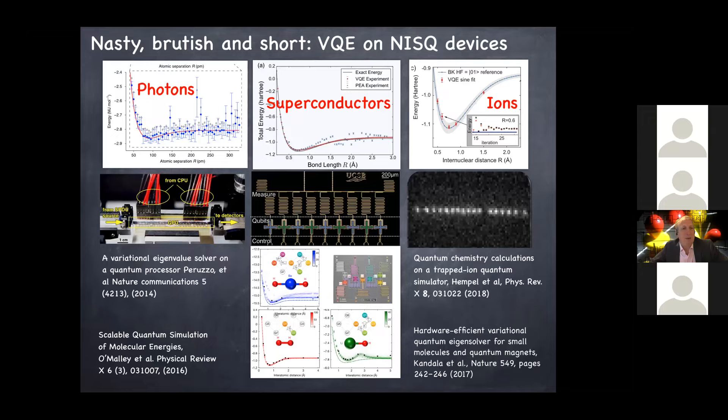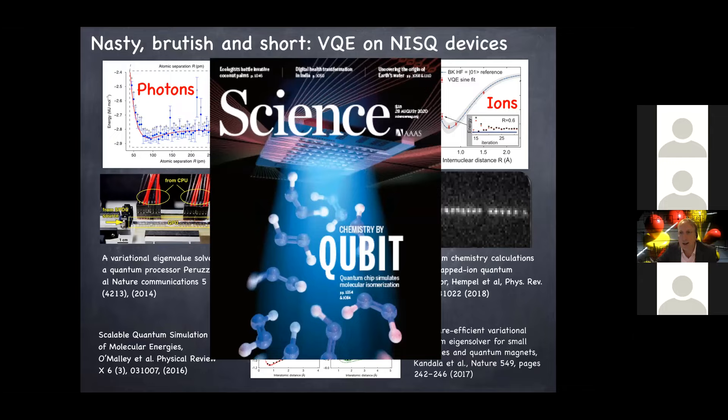We've managed to do experiments. So various we and many other groups working very hard on this have managed to do experiments on photons, which was the first experiment in the top left. Superconductors, there's two. The top one is an experiment by Google and the bottom is an experiment by IBM. The one on the right is an ion trap experiment that was done in Innsbruck. And as Sabri mentioned, we now have this very nice STAQ project where we're hoping to build much larger scale ion traps and really push forward with the ion trap approach for this. There was also a cover article in Science from the Google group, which is very nice to see. So this is really a very lively and interesting area.